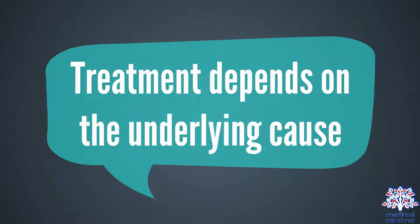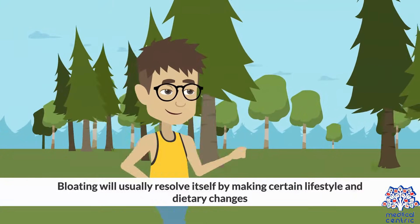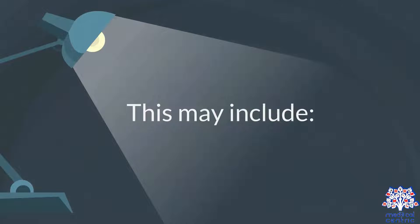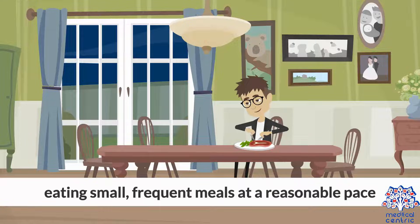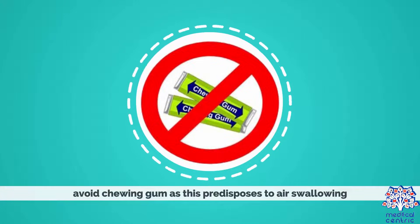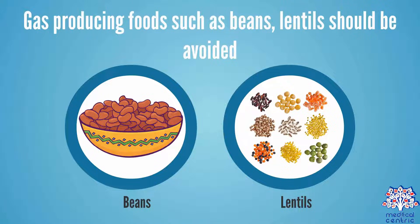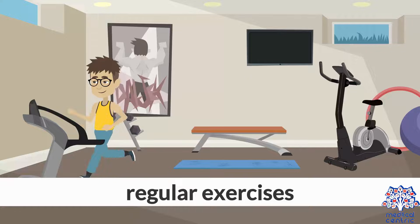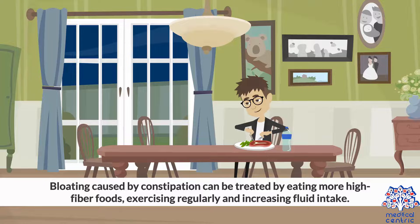Treatment depends on the underlying cause. Bloating will usually resolve itself by making certain lifestyle and dietary changes. This may include avoiding carbonated beverages, eating small frequent meals at a reasonable pace, avoiding chewing gum as this predisposes to air swallowing, avoiding gas-producing foods such as beans and lentils, regular exercise, and taking a walk after each meal. Bloating caused by constipation can be treated by eating more high-fiber foods, exercising regularly, and increasing fluid intake.